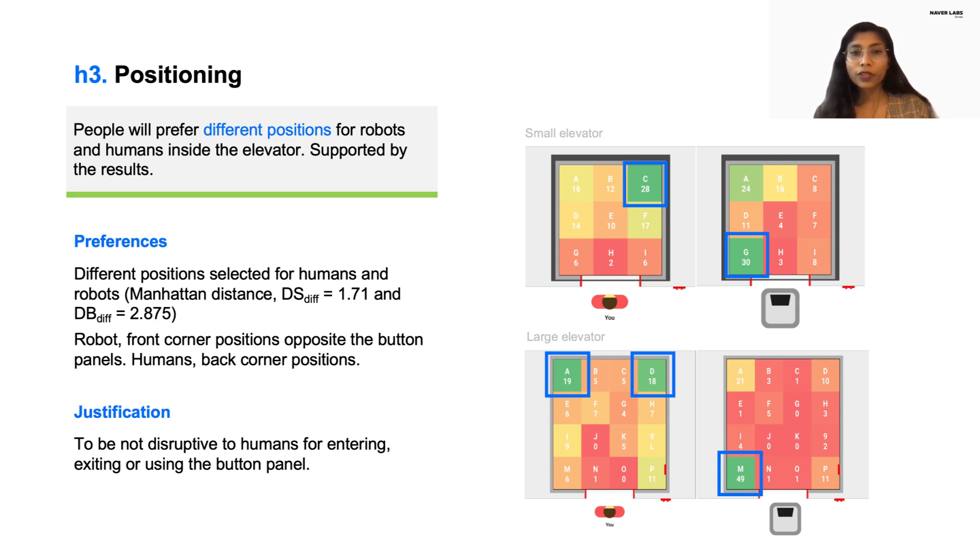For themselves, cornered positions at the back of the elevator were most preferred by the participants. These positions were different from robots, as also calculated through the Manhattan distance. This supports our third hypothesis. The reason for different placements was not to be disruptive to humans for entering, exiting, or using the button panel. Please refer to our paper for more details on results.